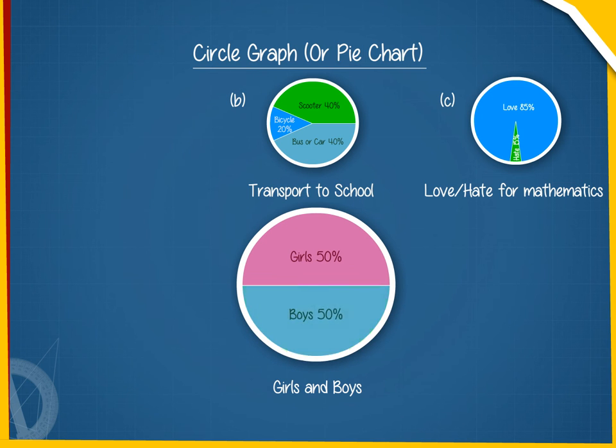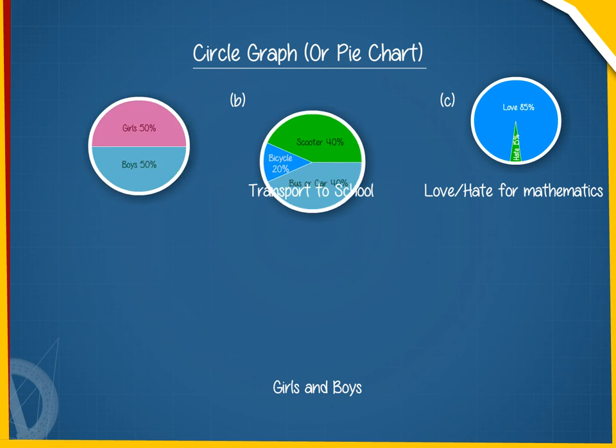A. One half of the circle represents boys and the other half of the circle represents girls. B.